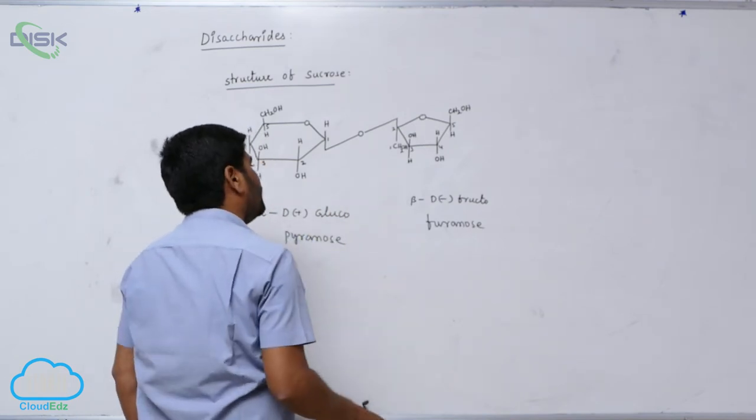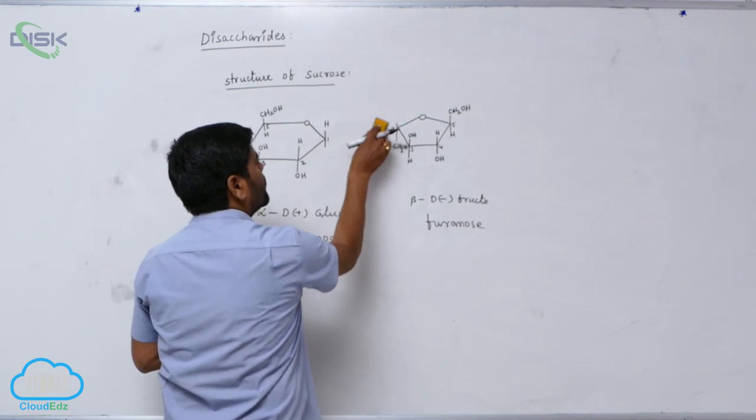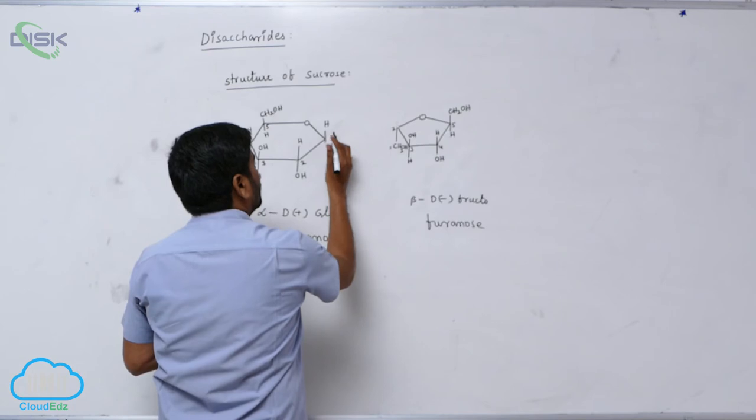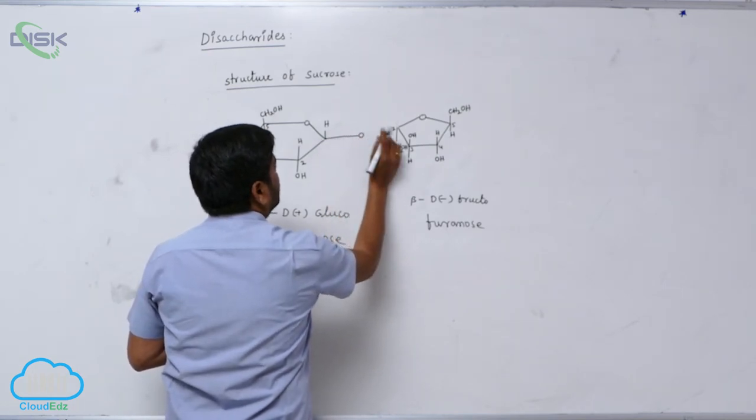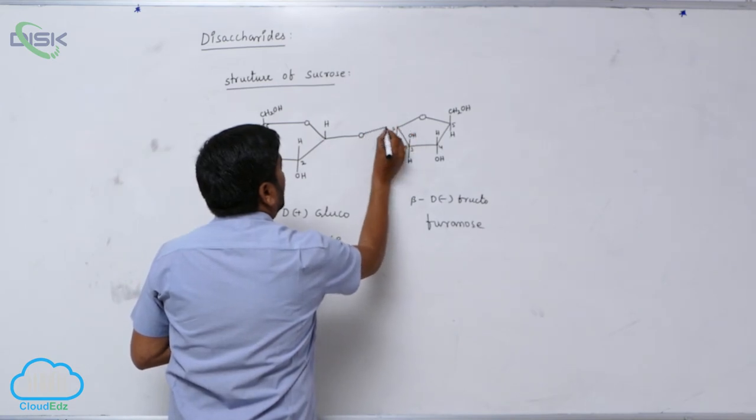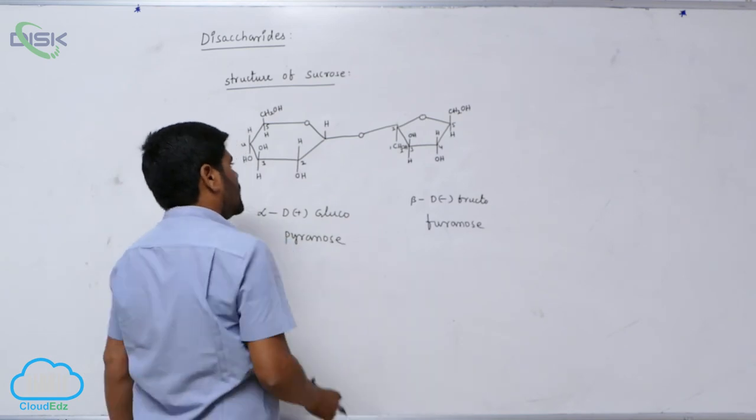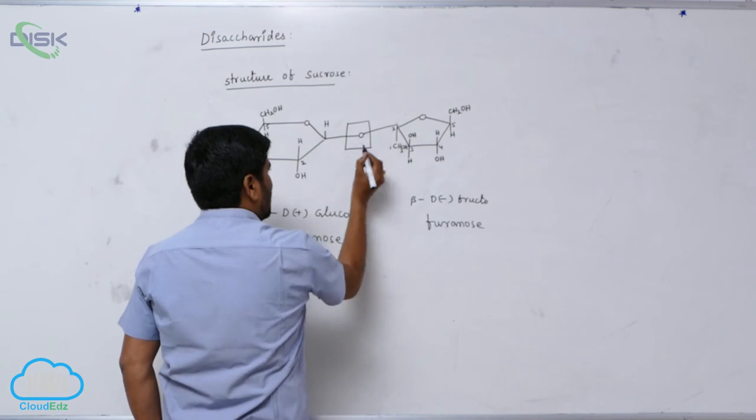We can also write like this way. So, instead of this, oxygen. Now, this type of linkage, this linkage is known as glycosidic linkage.